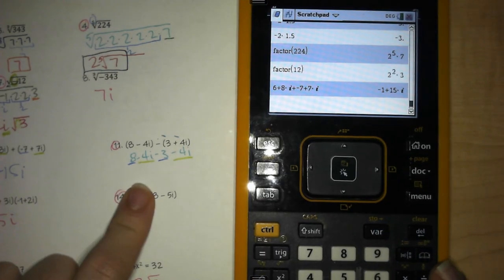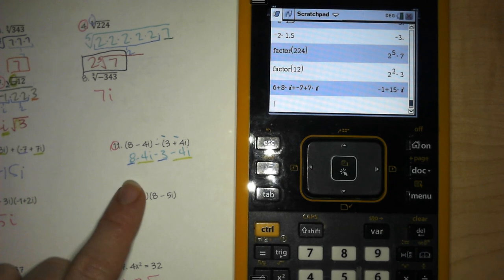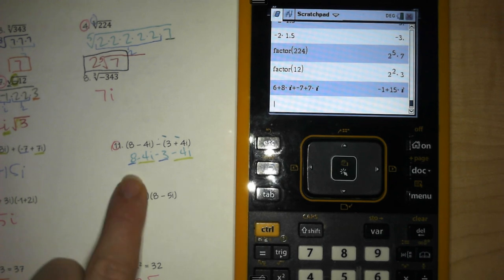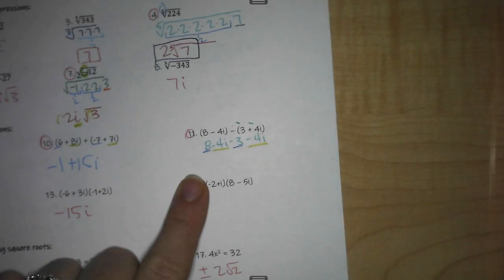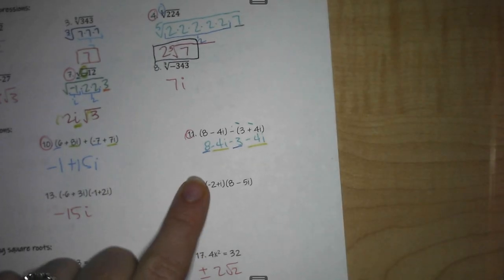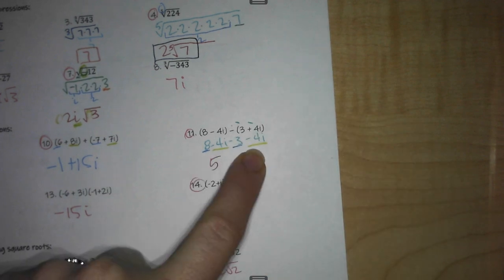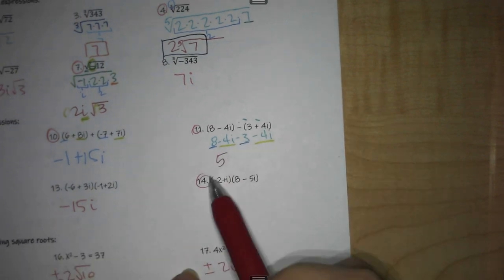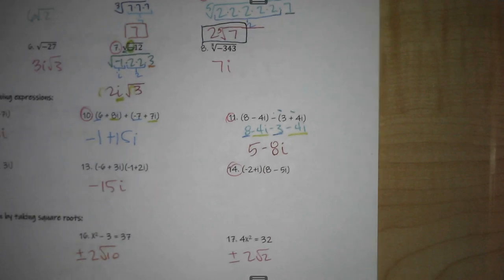Over here with my subtraction. Again, I can do this either way. I'm just going to do a combine like terms. So 8 minus 3 is 5. Negative 8i minus negative 4i, minus 4i is minus 8i. And that is your answer.